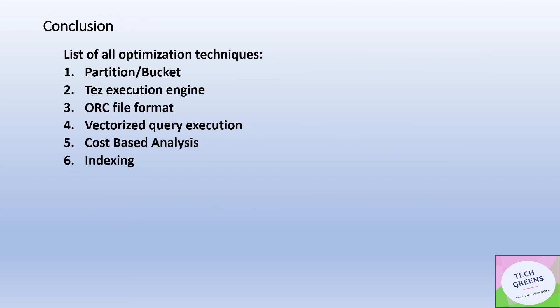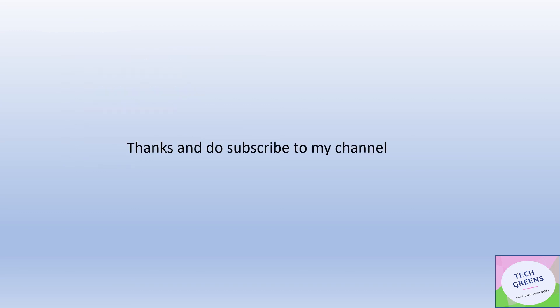To summarize the major optimization techniques in Apache Hive: first, partitioning and bucketing along with indexing should be applied upfront. Use the TEZ execution engine and ORC file format. Enable vectorized query execution. Finally, use the ANALYZE command on tables to compute statistics for cost-based analysis before query execution. These techniques will help achieve better query performance in Apache Hive.